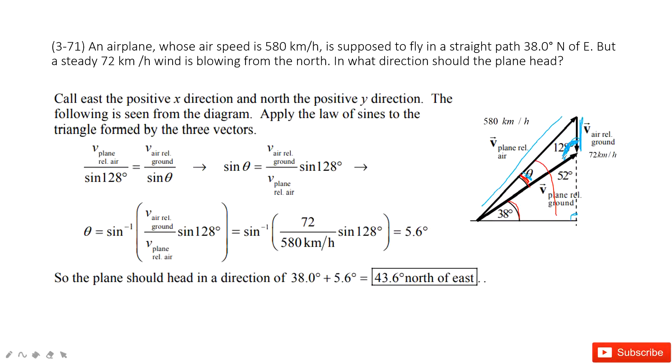Now you can see, we know this side, we know this angle, we know this side, we want to know this angle. This way applies the law of sines. So the velocity of the plane relative to air divided by sin 128° equals the velocity of the air to the ground divided by sin θ. In this one we can get the theta angle is 5.6 degrees.